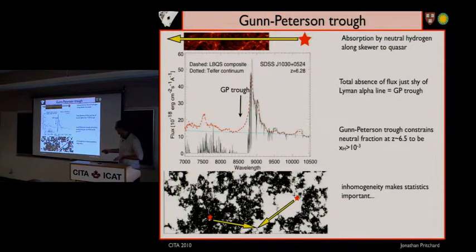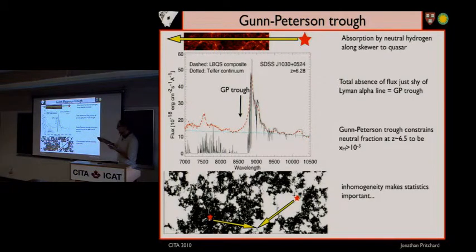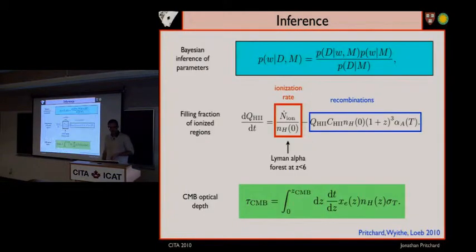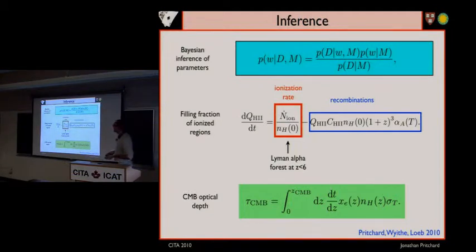It's also complicated by the fact that it depends upon the line of sight. So if you're looking at a quasar and it's mostly neutral gas along that line of sight, the spectra will look very different than if the quasar is looking through mostly ionized gas.